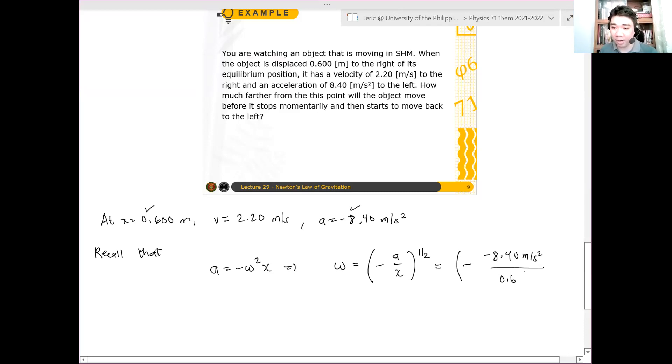And then from there, one can show that omega is simply 3.74 radians per second.